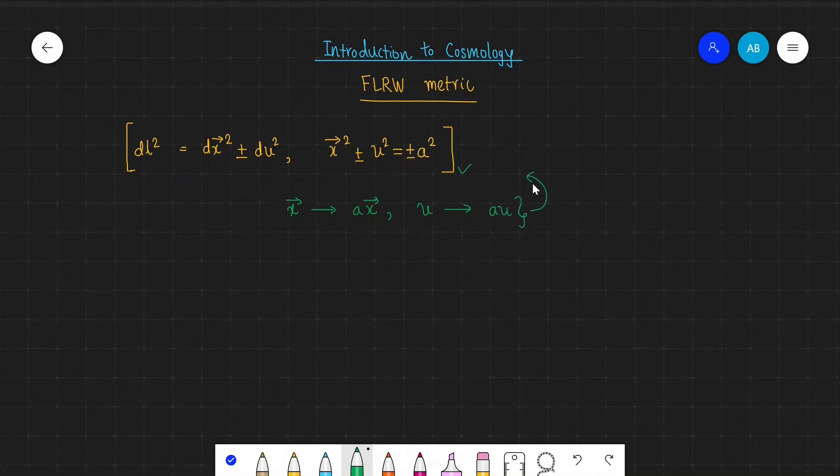Substituting this into our definition, we get dl² equals a²dx² plus-minus a²du², and the constraint becomes a²x² plus-minus a²u² equals plus-minus a².